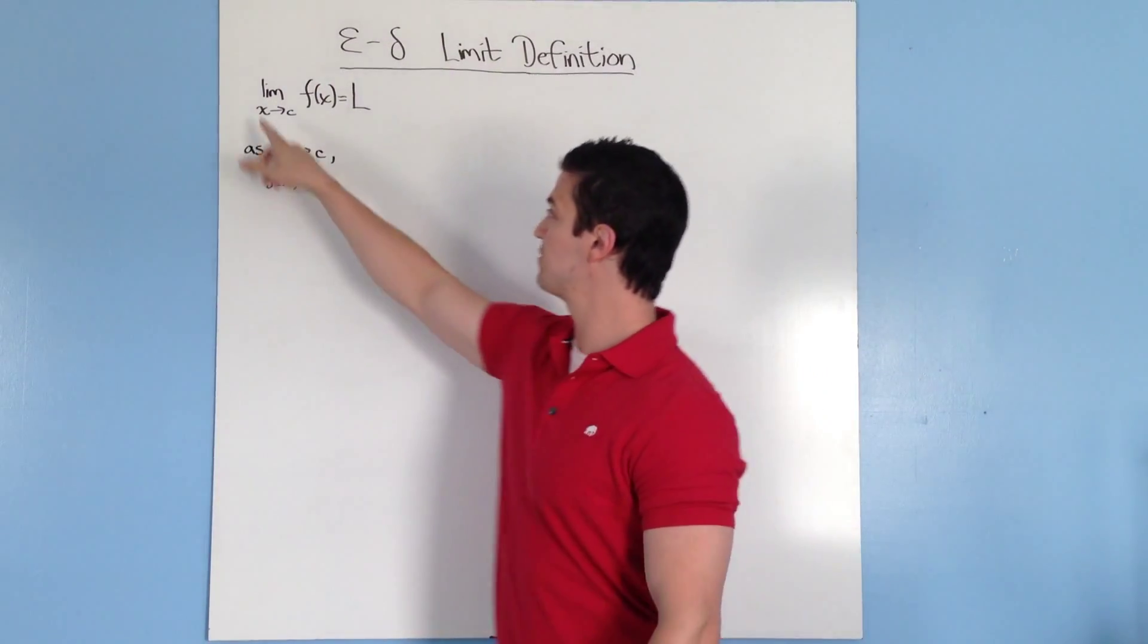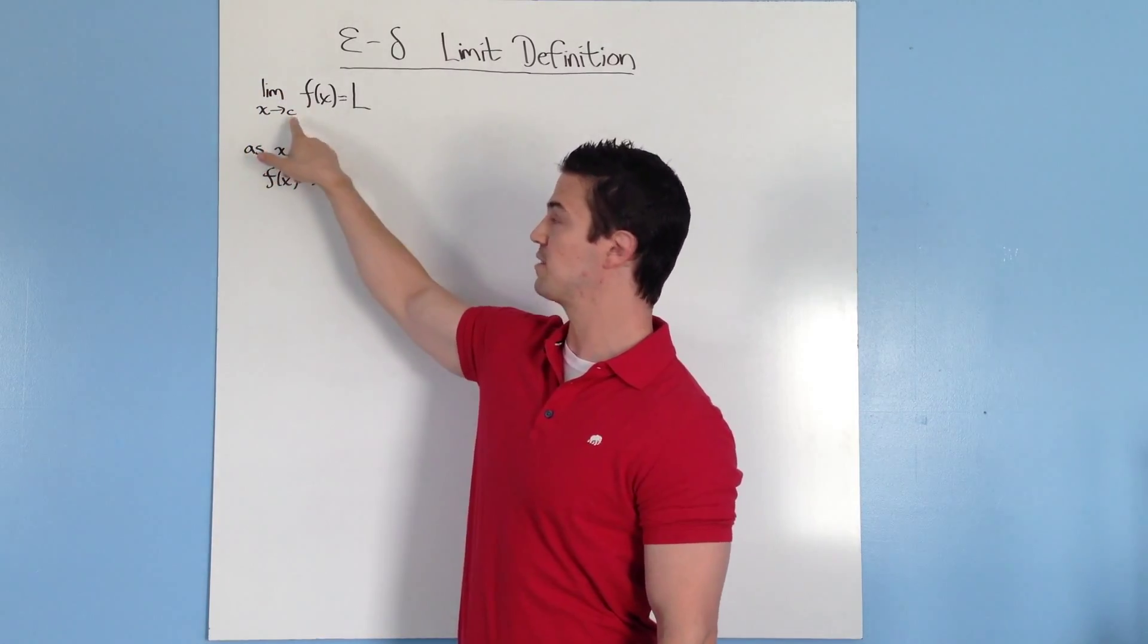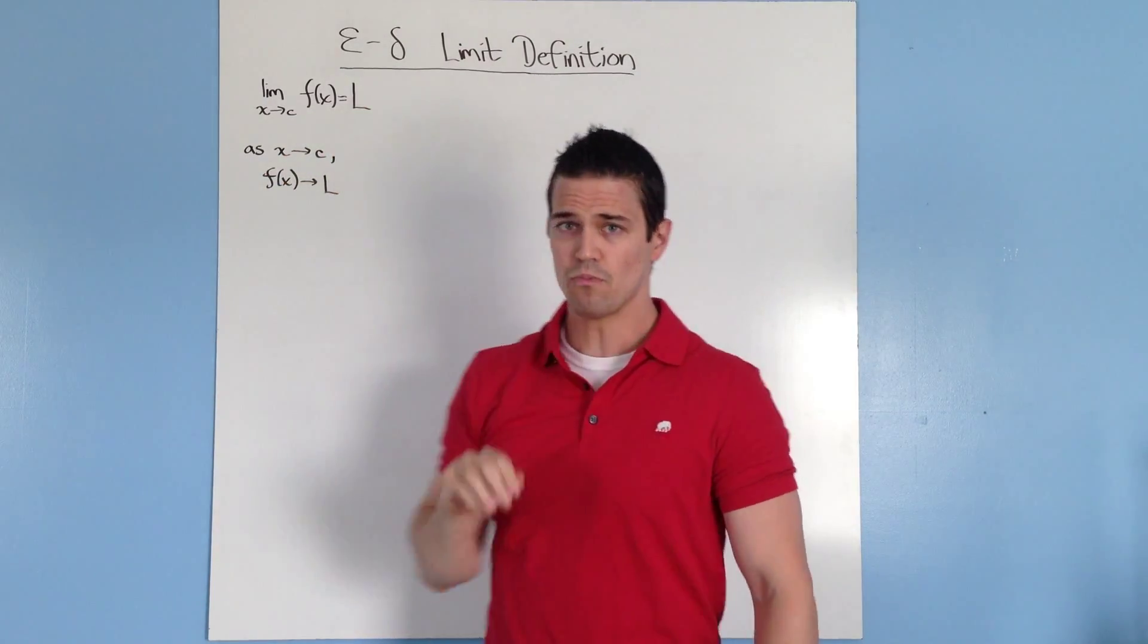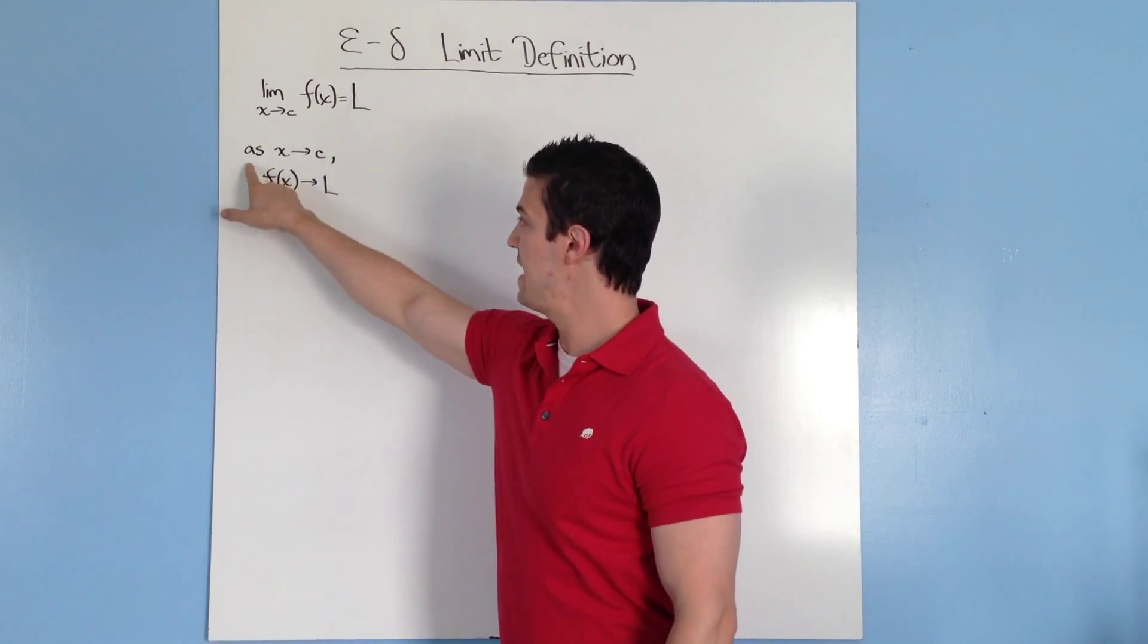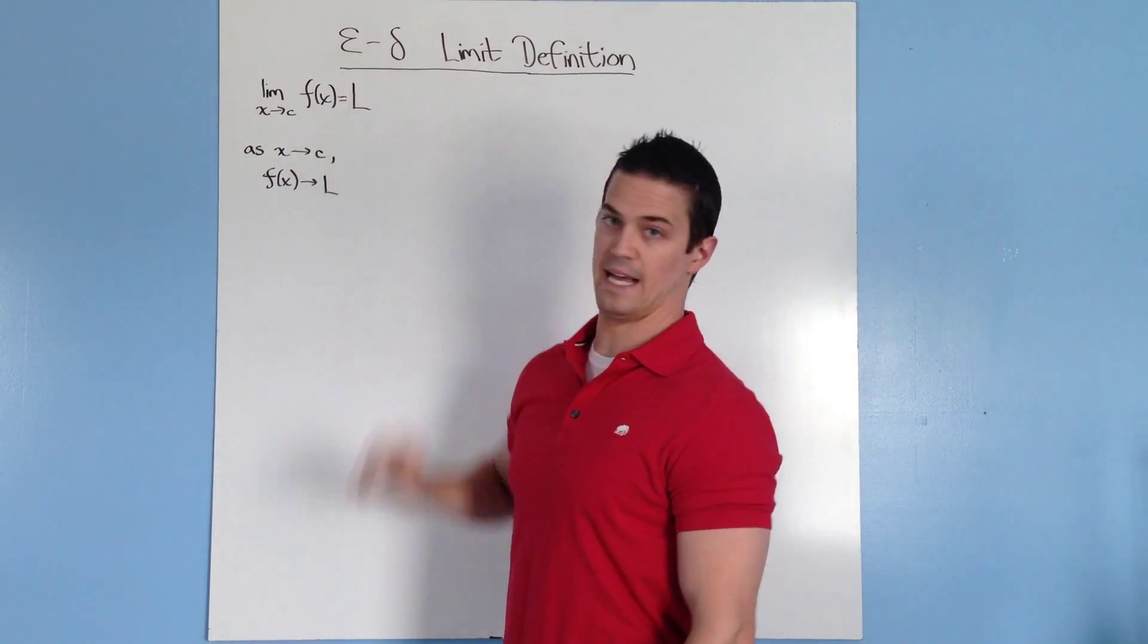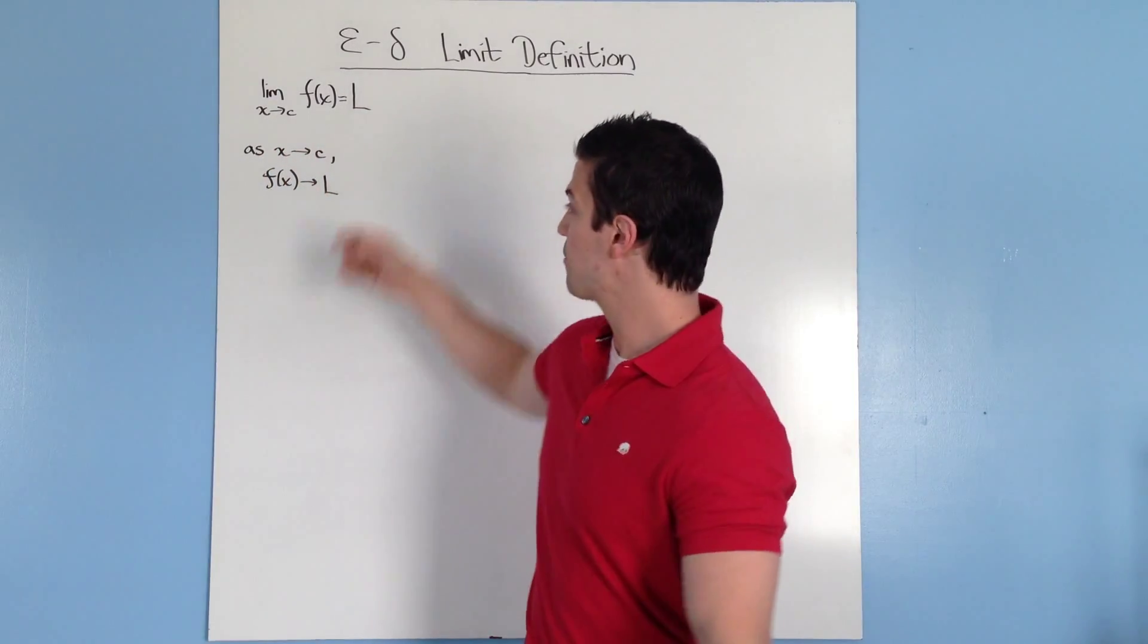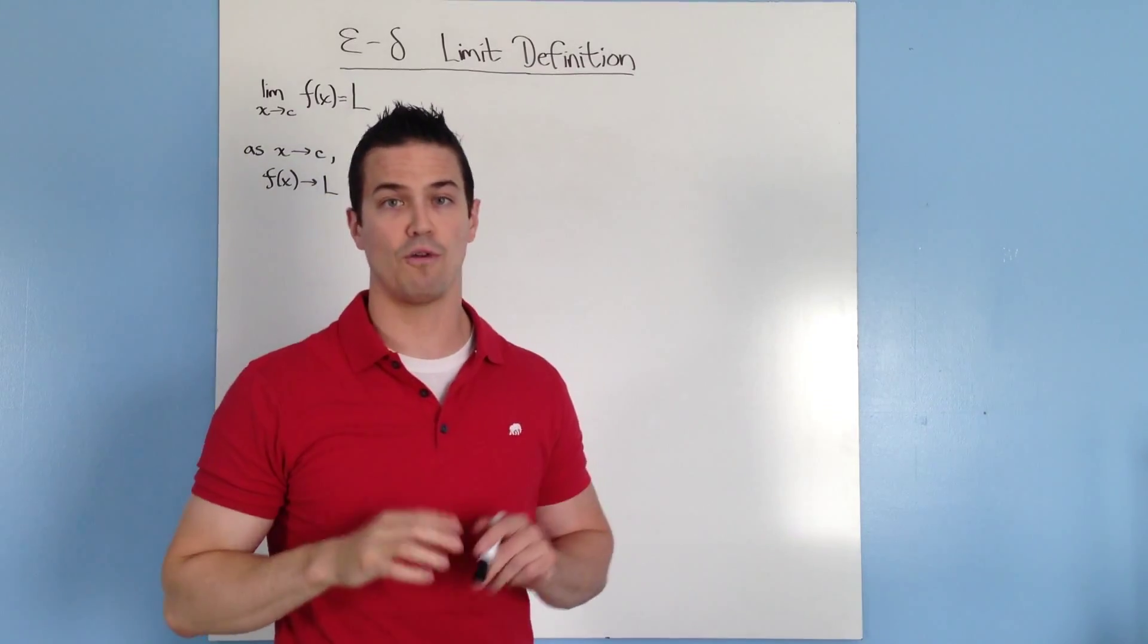So far we've gone over the limit notation, the limit of f of x as x gets infinitesimally closer to c equals the limit. And I'm going to write this a little bit different right underneath here where as x gets closer to c, infinitesimally closer to c, f of x gets infinitesimally closer to l. These two things are the same thing, it's just written a little bit differently. Now the reason I wrote it like this is because it really helps with our limit definition, which we're going to go over right now.